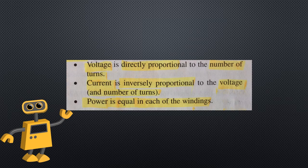Voltage, current, and impedance calculations. Table 10-3 shows algebraic equations relating voltage, current, and impedance in a transformer. Voltage is directly proportional to the number of turns. Current is inversely proportional to the voltage and the number of turns. Power is equal in each of the windings. These are very important concepts.